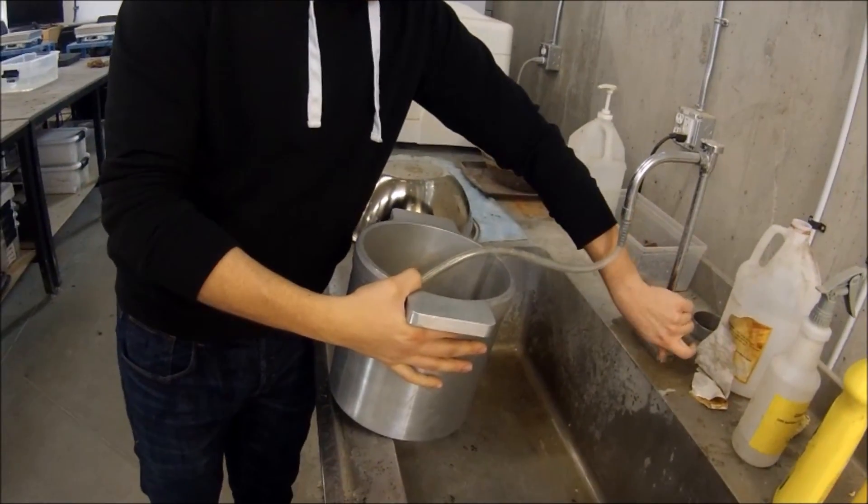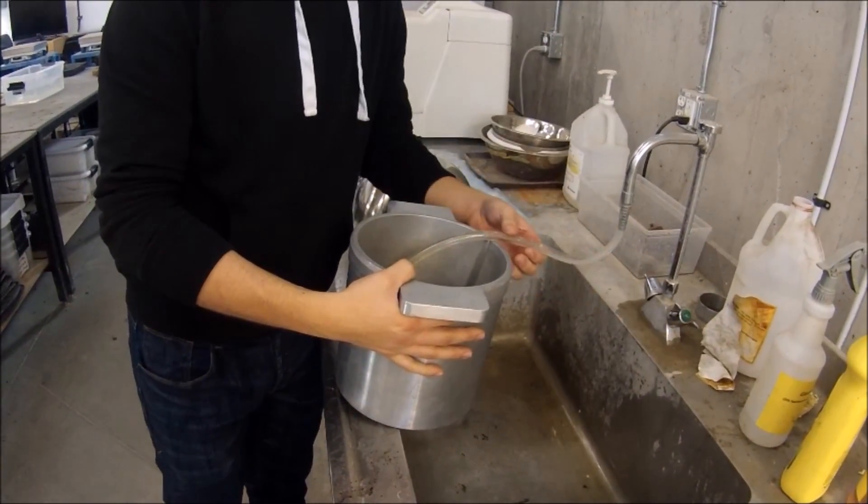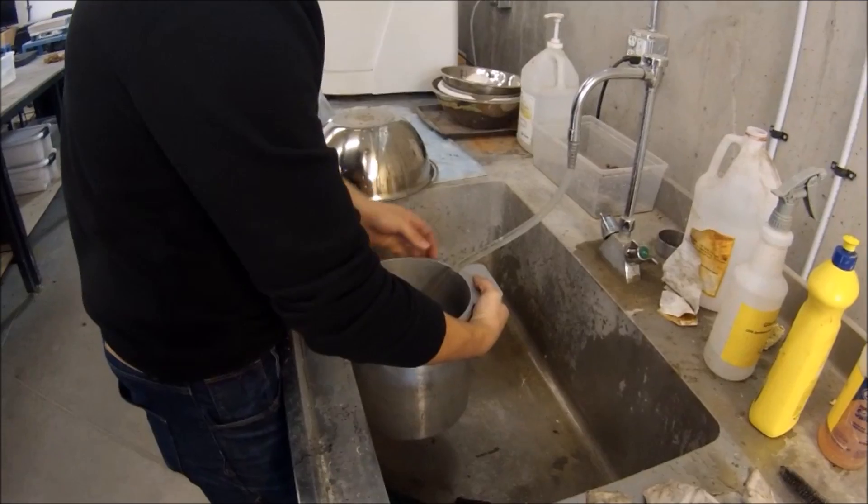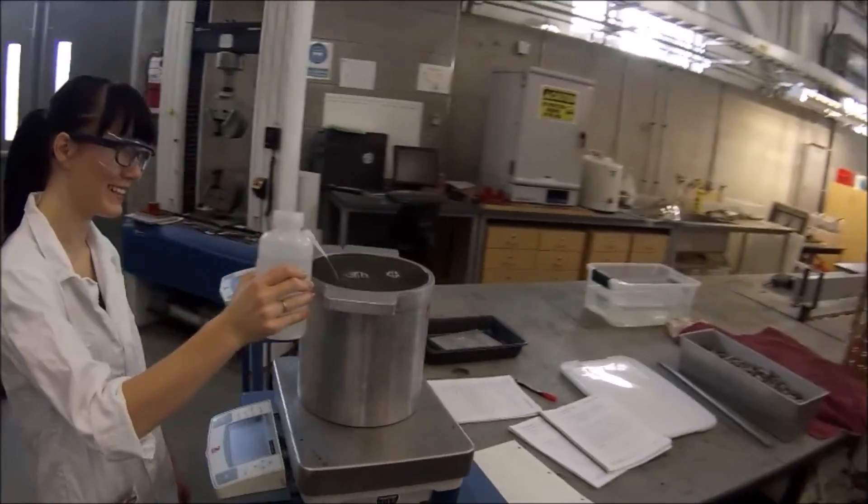Next, fill the measure completely full with water and determine the weight of the measure and the water. Make sure to completely fill the measure by topping it off with a squirt bottle.